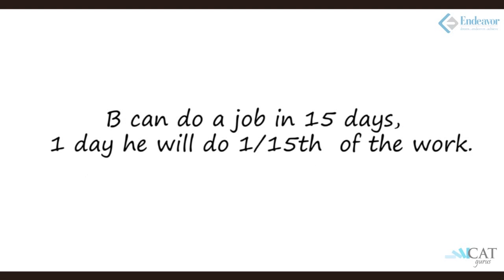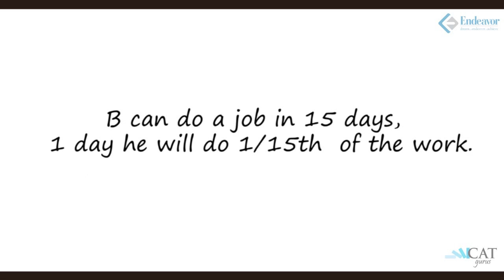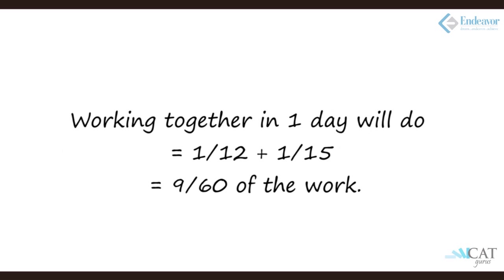Similarly B will take 1 by 15th in a day. So together in a day how much work will they do? 1 by 12 plus 1 by 15. Now adding we get 9 upon 60. So 9 upon 60th of a work is done in a day. This can be also written as 3 upon 20. So in how many days will it finish? If we inverse it we will say days to complete the work which is nothing but 20 upon 3.